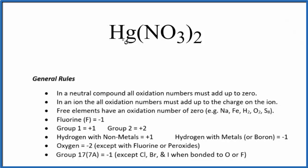We don't know the oxidation number for mercury. That can have a different oxidation number depending on what it's bonded to. Here, it's bonded to two nitrate ions.